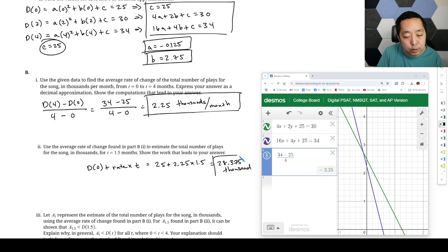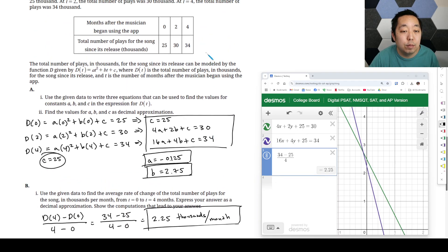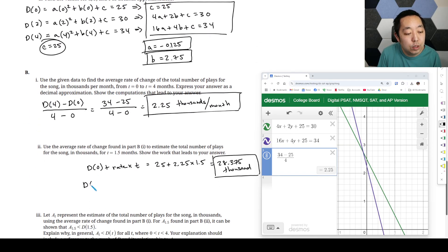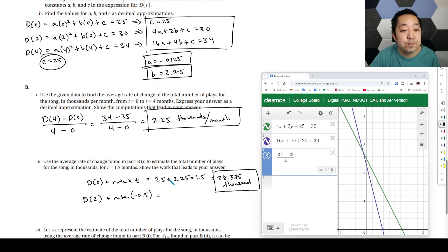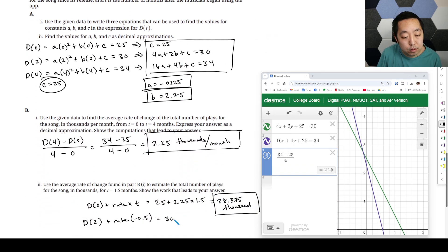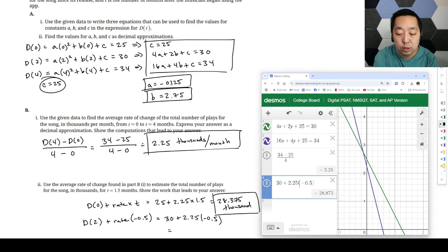So that's one way to approximate. The other way you could say is, well, that's the average rate, but maybe we want to do it based off of 2. So you could do D(2) plus the rate, and then you would say you're backing off 0.5 months, so it'd be negative 0.5 there. So that would be 30. Either of these are acceptable, by the way. There's not a right answer necessarily, strictly speaking, unless they have something in the guidelines, but they didn't say anything in the prompt to do that. And they get 28.875. So somewhere in that range.